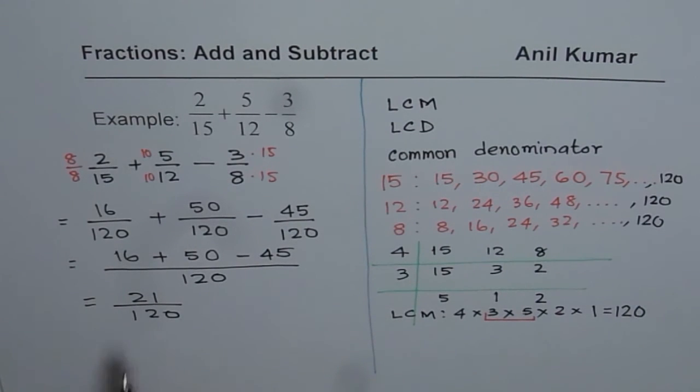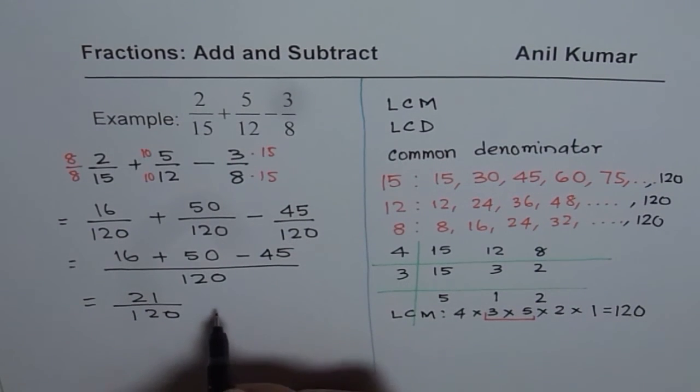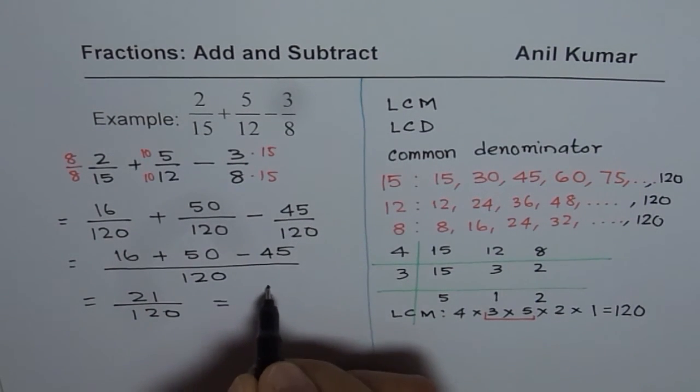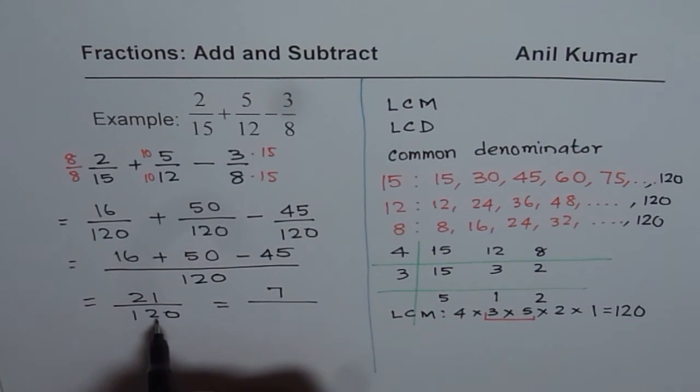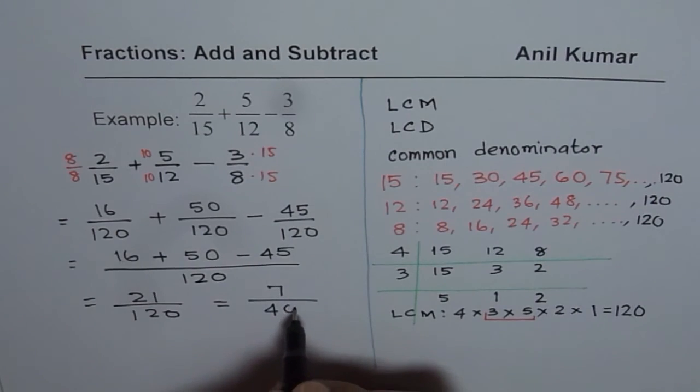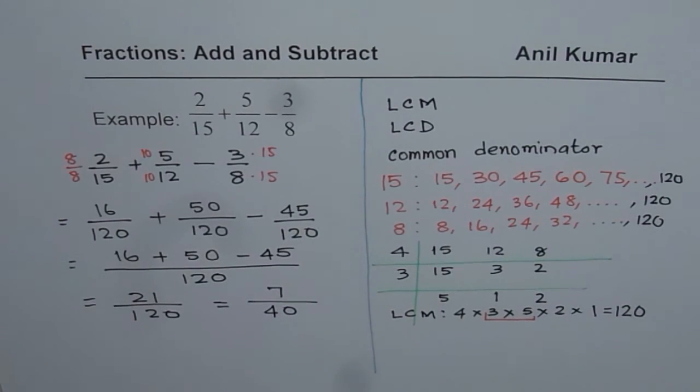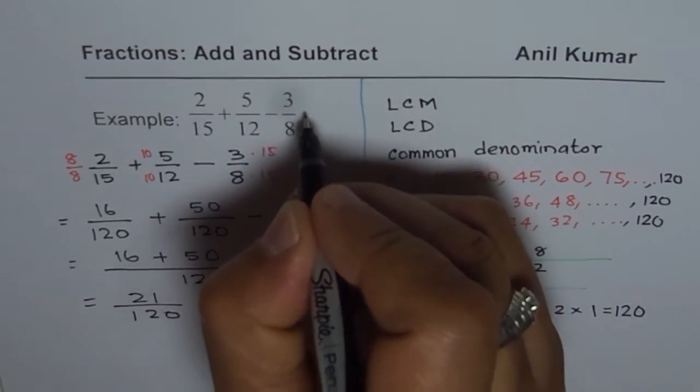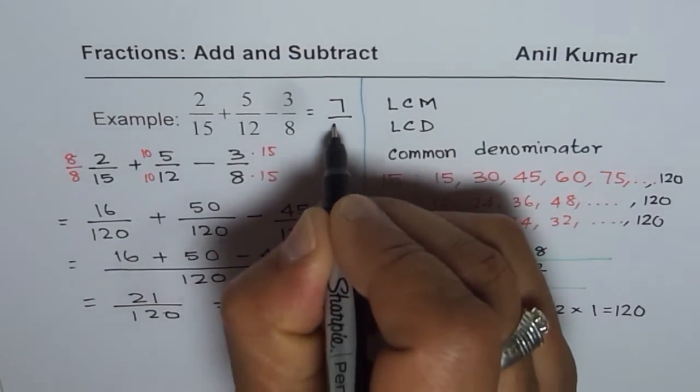Now, it is a good idea to simplify this. 21, 2 plus 1 is 3. So it can be divided by 3. So dividing by 3 we get 7. And dividing this by 3 we get 12 goes 4 times 40. So 7 over 40 is the answer. The answer for this is 7 over 40.